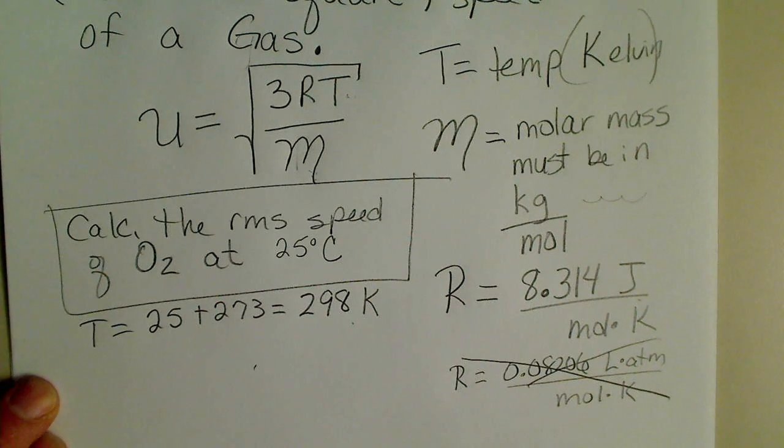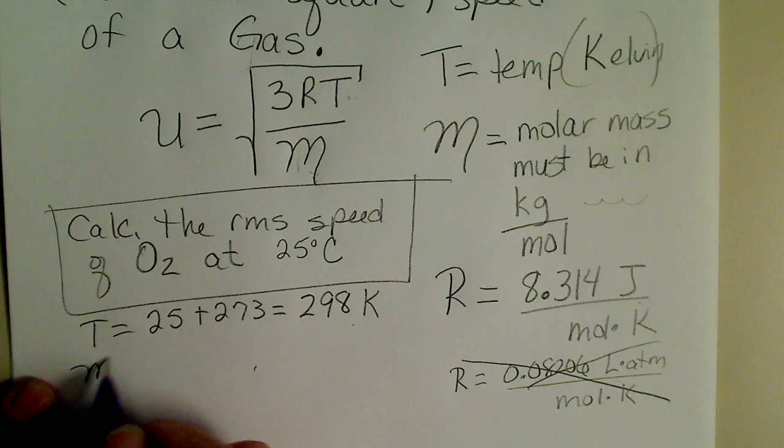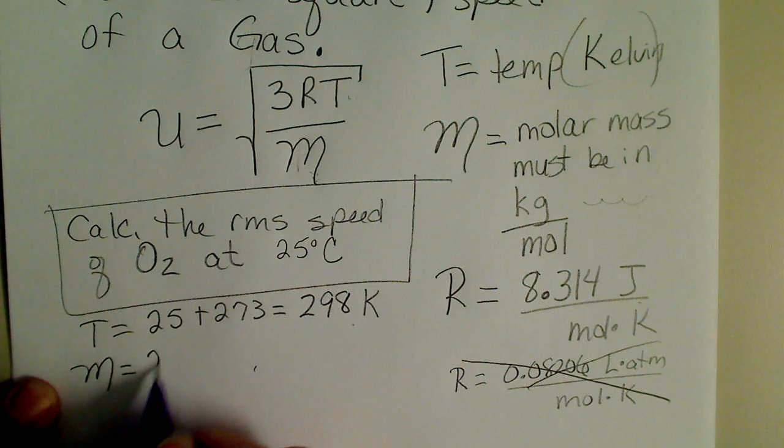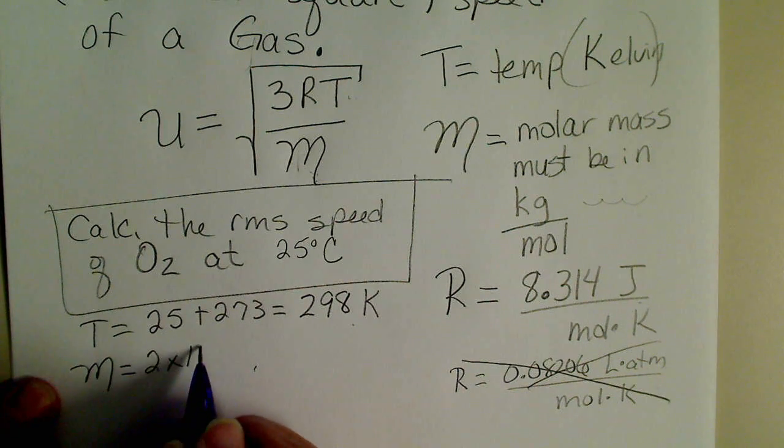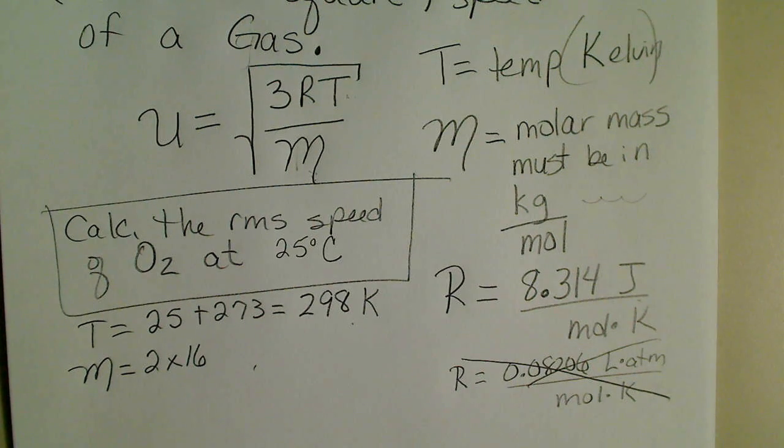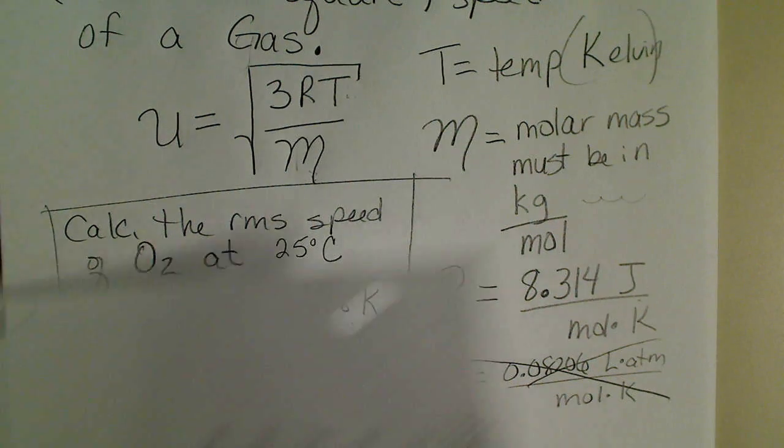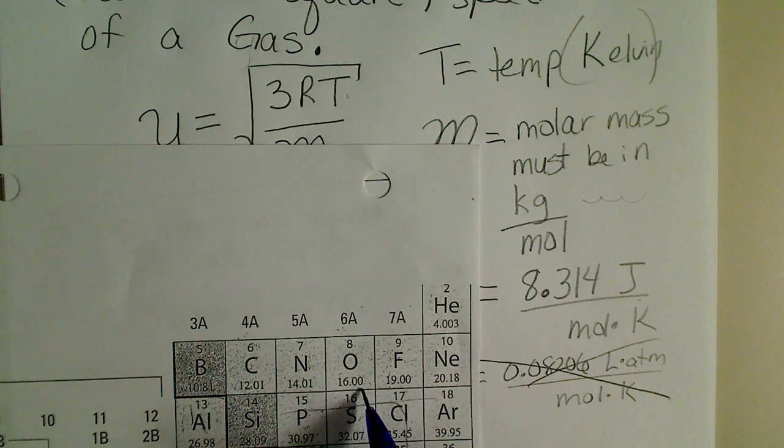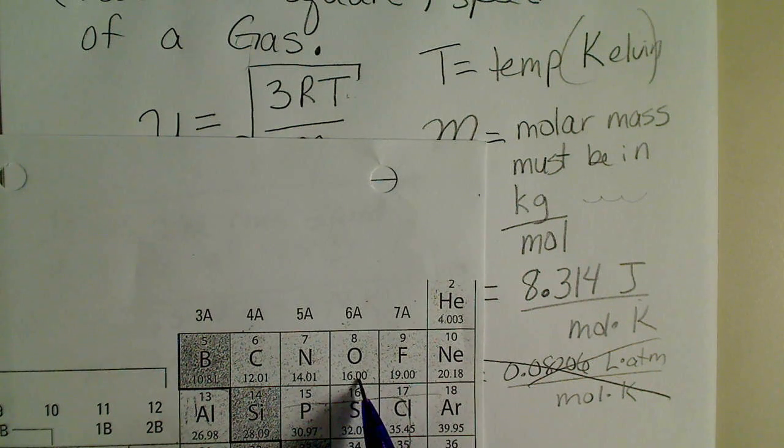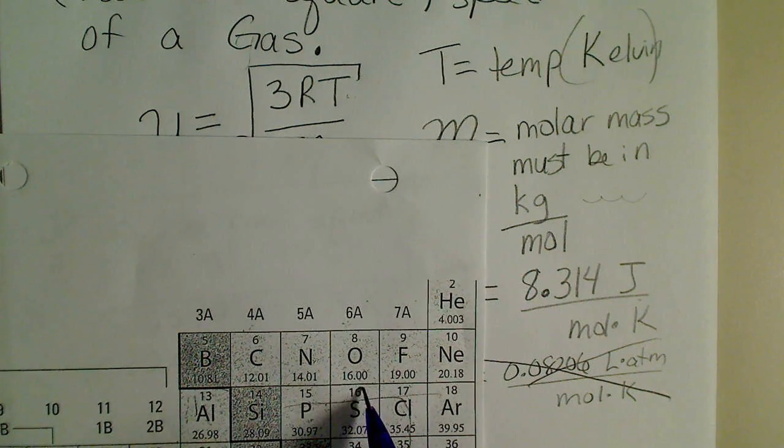Room temperature in Kelvin is 298. That's a good number to remember. The molar mass of oxygen is two times what oxygen weighs.